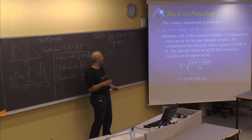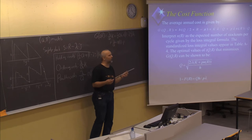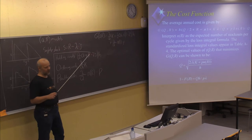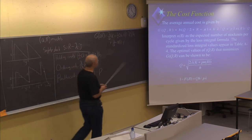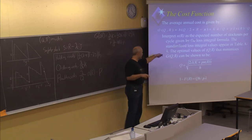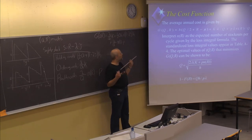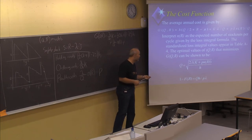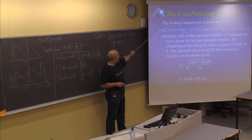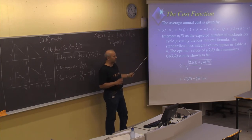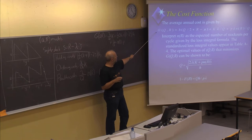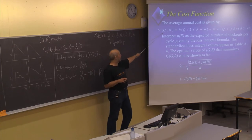We will not go much into detail on that, but we can show how we can also use the normal distribution in this case, because we assume that the demand in the lead time is normally distributed. To find the expected number of units short per cycle, which is dependent on the reorder point R, we need to find the optimal values. Since we want to find the lowest possible cost, but we have two different variables, we need to derive the function with respect to each of these variables.